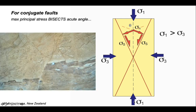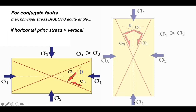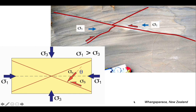Here we have a set of faults seen in outcrop from New Zealand. We can draw in the faults, see the offsets, and deduce the orientation of sigma 1 bisecting the acute angle between these conjugate faults. We can flip our diagram over: in this case the bisector of the acute angle is horizontal, generating thrust faults. Looking at an outcrop again from New Zealand, we can draw on the faults and show the offsets — the bisector of the acute angle, sigma 1, is horizontal. So a horizontal sigma 1 is the stress state that characterises thrust faulting.